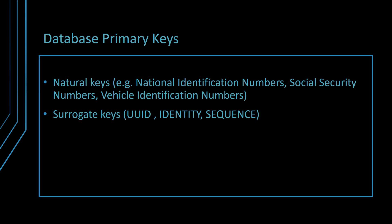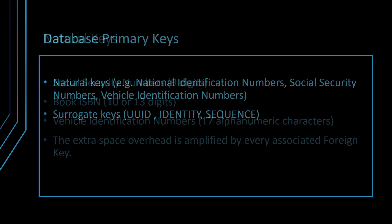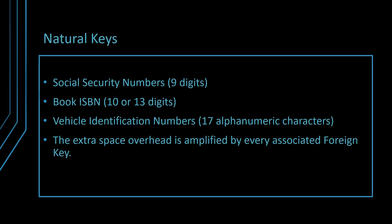In a relational database, the primary key is used to uniquely identify a table row. When it comes to choosing a primary key, there are basically two options: a natural or a surrogate key. A natural key, like a social security number, vehicle identification number, or a book ISBN, is assigned by a central organization who guarantees that no two natural keys are identical. The major problem with a natural key is its size.